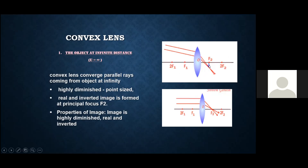If the rays are not parallel, they will not form at the principal focus — they will form either above or below. But when parallel, the image will exactly form at the principal focus. The properties of this image: it is highly diminished, real and inverted, and the image is formed at the principal focus.